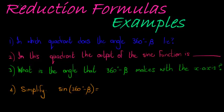So here's another slightly different question that takes us step by step through how to answer this question: to simplify sine of 360 minus beta. The first question we ask ourselves is in which quadrant does that angle lie?